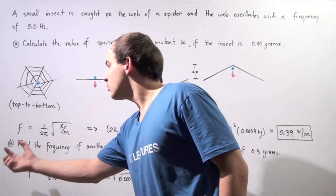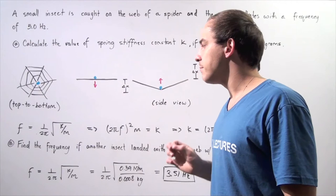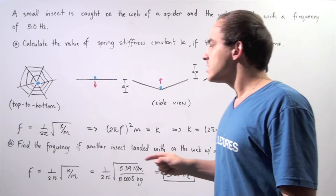So the frequency of our harmonic motion is equal to 1 divided by 2π multiplied by the square root of k divided by m. So if we solve for k,